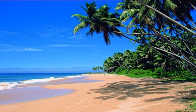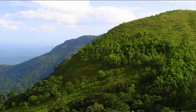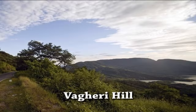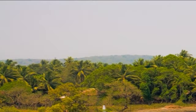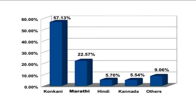Goa is home to some of the finest sea beaches in the country. The terrain is undulating with alternate chains of hills and long, narrow valleys. The hills range in altitude from 250 meters to 400 meters. The Wagiri hill near Walpoy is located much to the west of the Western Ghats and is connected by a narrow link with the Surla Ghat. The eastern border of the state generally marks the water divide between easterly and westerly flowing rivers. Languages spoken in Goa are Konkani 57.13%, Marathi 22.57%, Hindi 5.70%, Kannada 5.54% and others 9.06%.